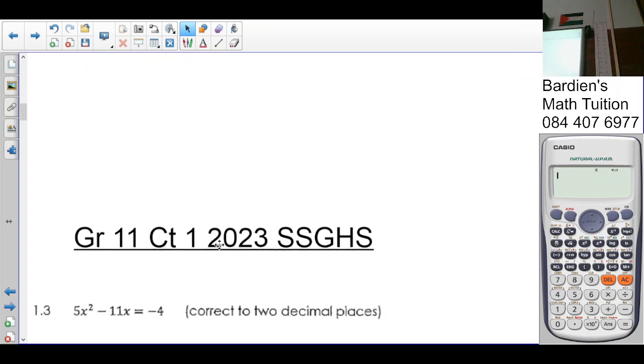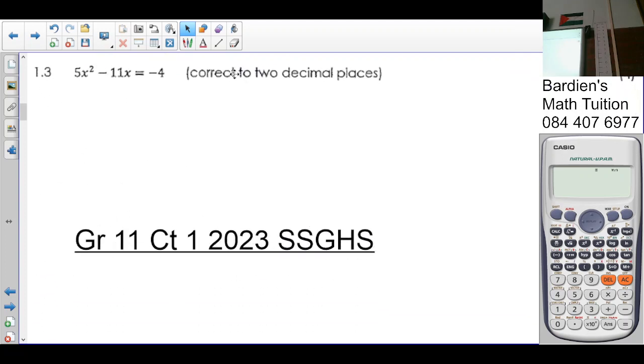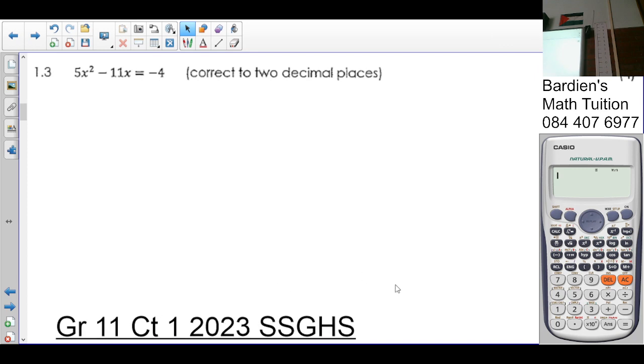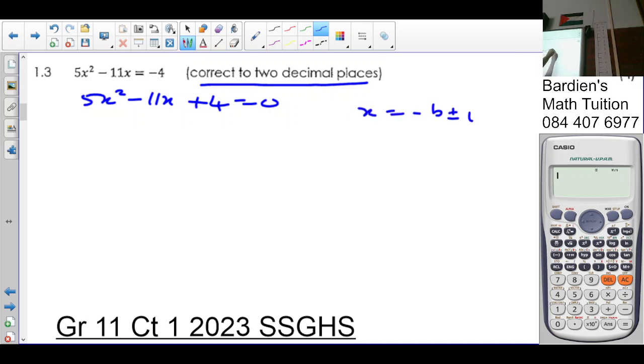The paper and the memo can be found in the description box. So we have 5x squared minus 11x plus 4. We're going to first get it in standard form of x squared plus bx plus c. Normally when you see it corrected to a decimal place, we know we must use the quadratic formula. The formula is x equals minus b plus minus the square root of b squared minus 4ac over 2a. Your a value is 5, your b value is negative 11, and your c is 4.